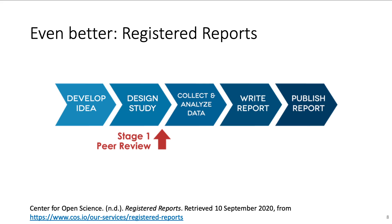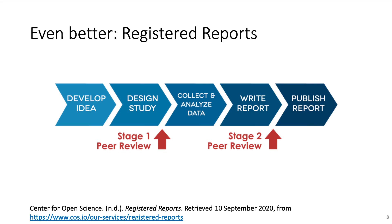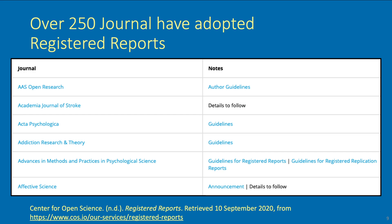That means the journal commits to publish the complete article upon completion of data collection, given that the authors stick to their registered methodology, which is ensured via a second round of peer review. Registered Reports solve a lot of problems like p-hacking, HARKing or publication bias. Further, due to their strict formality, they cannot be as easily abused as simple pre-registrations. While not all journals have adopted the Registered Report publication format, support is continuously growing. As of now, over 250 different journals have adopted Registered Reports in some form. While implementation in some cases might still be clumsy, journals are continuously learning and improving. The Center of Open Science curates a complete list of journals which support Registered Reports.